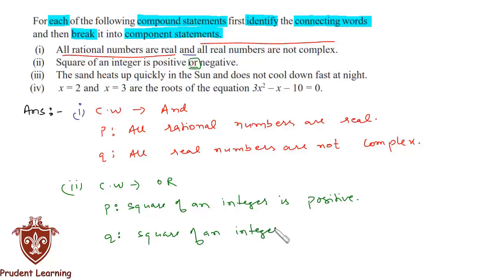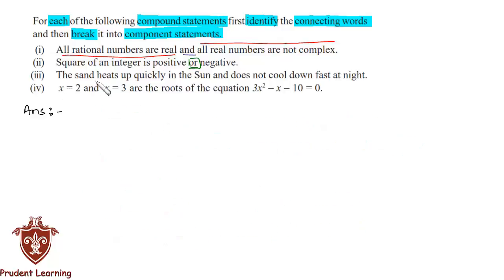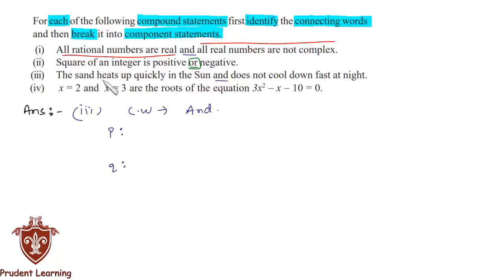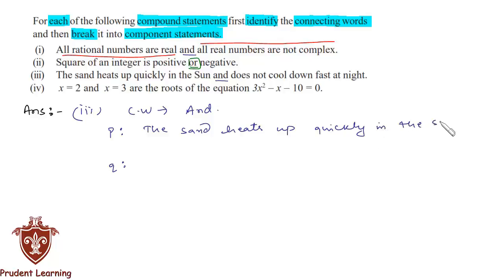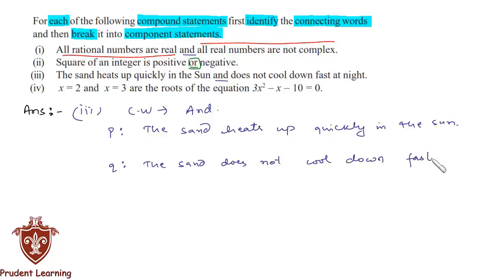In the third section, the given compound statement is: 'The sand heats up quickly in the Sun and does not cool down fast at night.' The connecting word is 'and'. The first component statement P is: 'The sand heats up quickly in the Sun,' and the second component statement Q is: 'The sand does not cool down fast at night.'